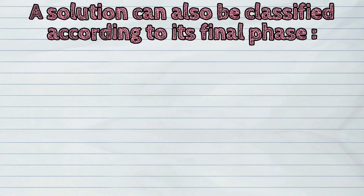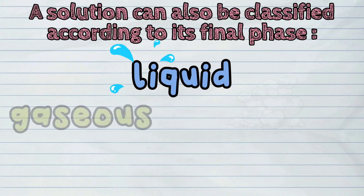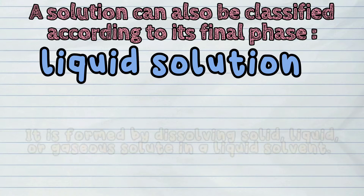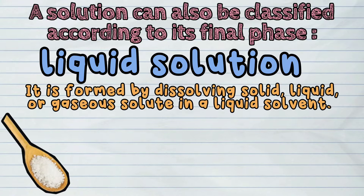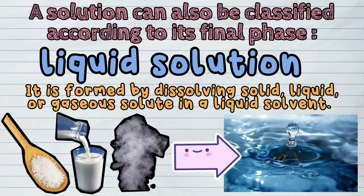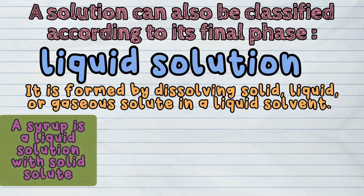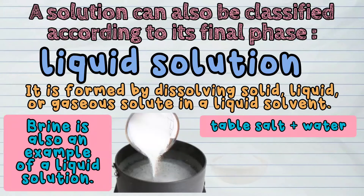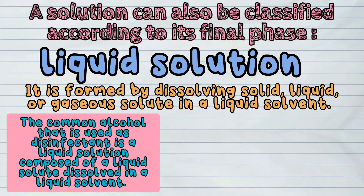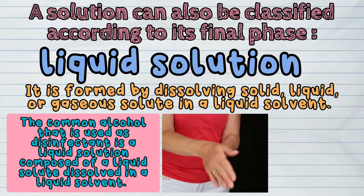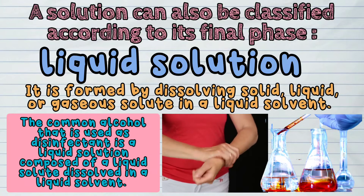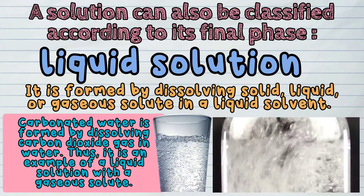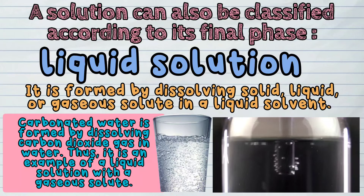A solution can also be classified according to its final phase as liquid, gaseous, or solid solution. A liquid solution is formed by dissolving solid, liquid, or gaseous solute in a liquid solvent. Examples: a syrup is a liquid solution with solid solute. Brine is also an example of a liquid solution. Common alcohol used as disinfectant is a liquid solution composed of a liquid solute dissolved in a liquid solvent. Carbonated water is formed by dissolving carbon dioxide gas in water, making it a liquid solution with a gaseous solute.